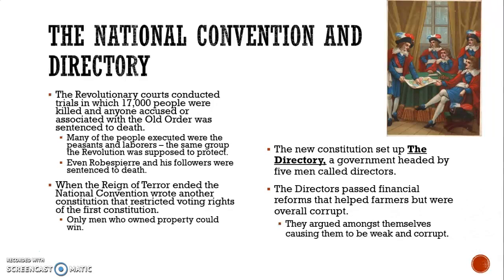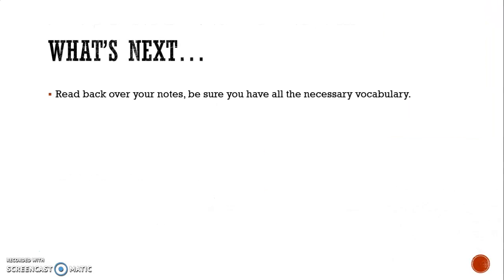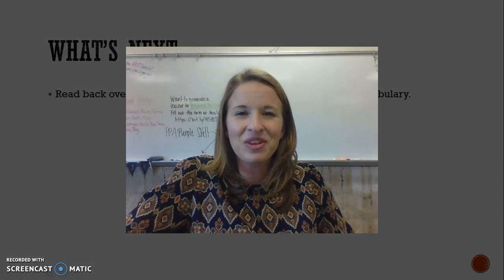The Reign of Terror finally ended when the National Convention wrote another constitution that restricted voting rights — now only men who owned property could vote or hold office. The new constitution set up the Directory, a government headed by five men called directors. The directors passed some financial reforms that helped farmers, but they were largely corrupt, looking out for their own interests and arguing among themselves. This paved the way for Napoleon Bonaparte to come into power. Make sure you review your notes and have all necessary vocabulary written down, as bolded and underlined terms. Thanks for joining, and I'll see you in class.